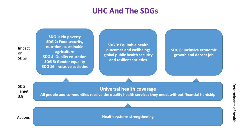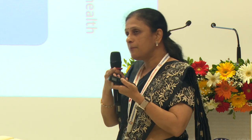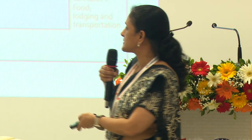Universal health coverage is not only related to one SDG. If individuals are fit, it influences other SDGs — equitable health outcomes impact economic and job opportunities; if focusing on nutrition, the agricultural sector also matters. It is a very comprehensive approach, and how one SDG influences another is important. The foundation for all this is health system strengthening.